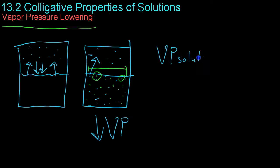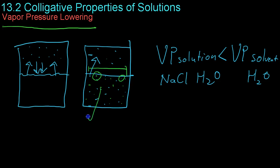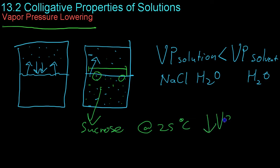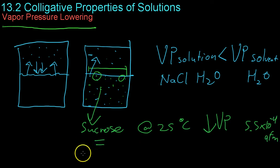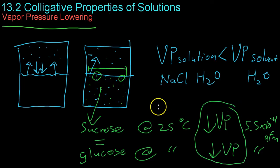In summary, the vapor pressure of a solution will always be less than the vapor pressure of the pure solvent — in this case H₂O, compared to salt water. Colligative properties don't depend on the actual solute, so for example, sucrose at 25°C would lower the vapor pressure by 5.5×10⁻⁴ ATM, and glucose at the same temperature and concentration would lower it just the same. This is why vapor pressure lowering is a colligative property: it depends on the molality of the solution, not the actual solute.